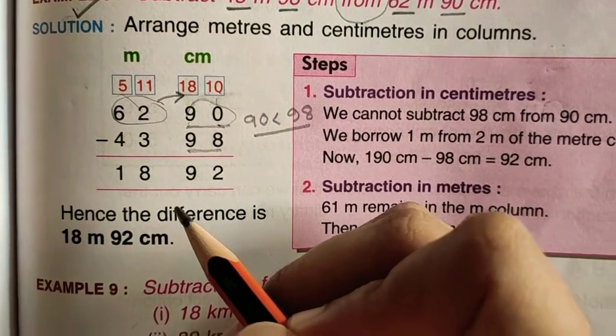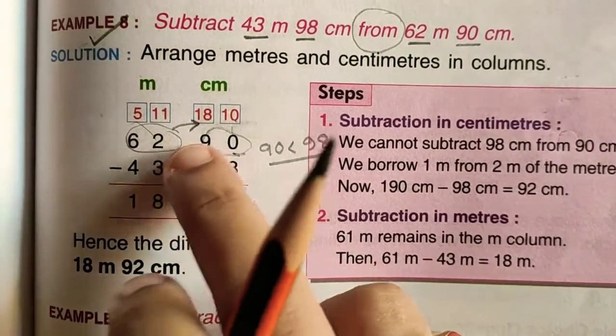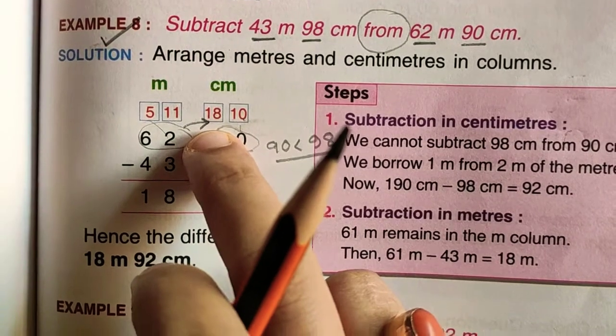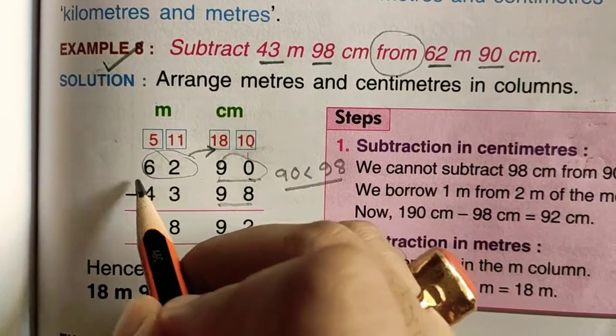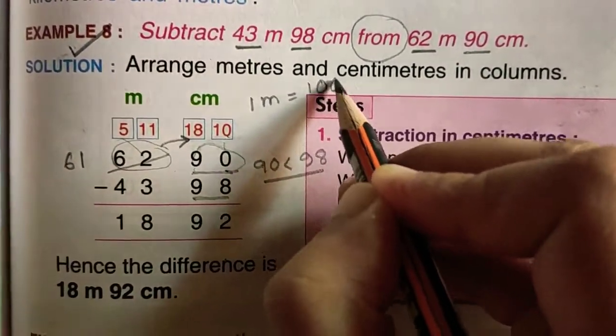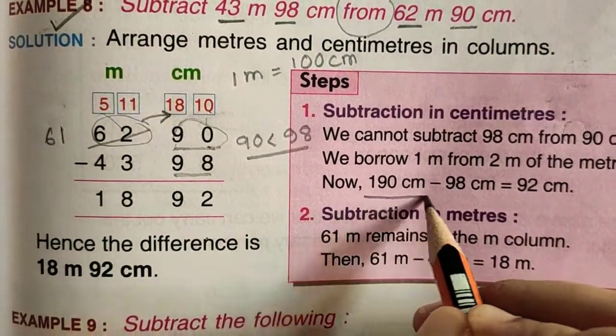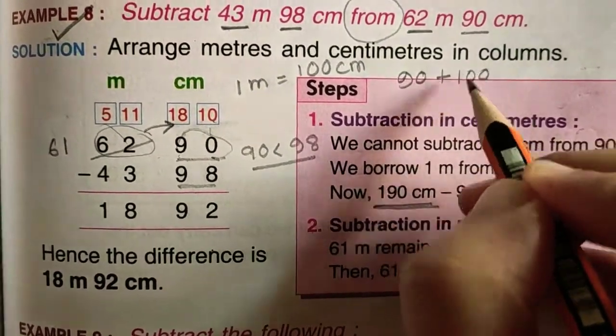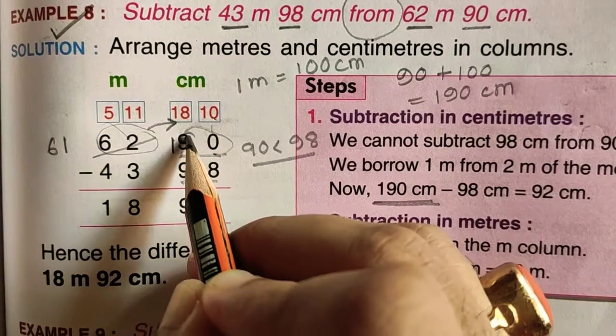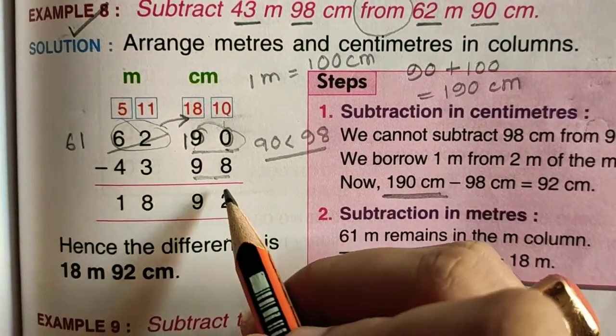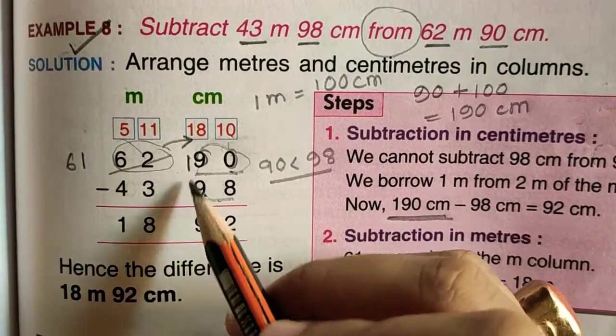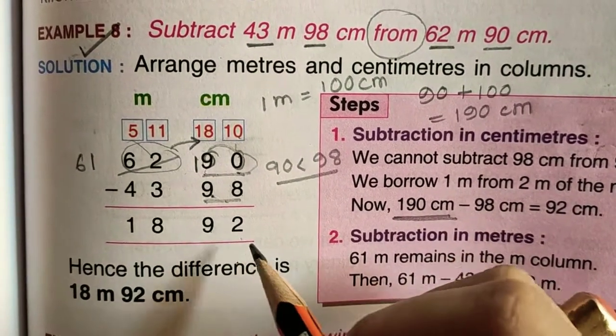Then write the values according to their columns. In meter column I have 43 and 62, and in centimeter column I have 98 and 90. Now let's start the subtraction. Here we have to subtract 98 from 90 centimeter, but 90 is less than 98 so we cannot subtract it. So we have to borrow one meter from this 62 meter. When we borrow one meter, it becomes 100 centimeters. So 90 plus 100 will be 190 centimeters.